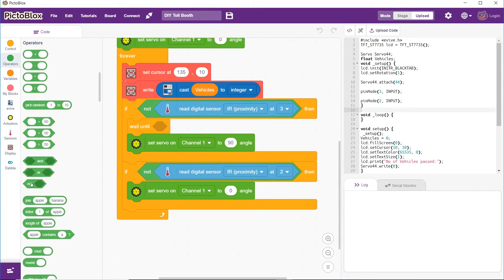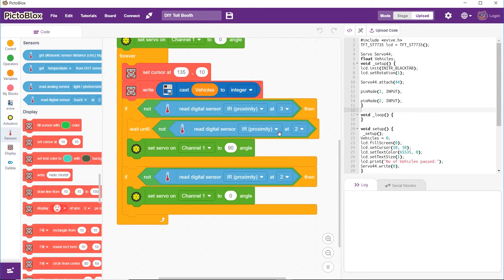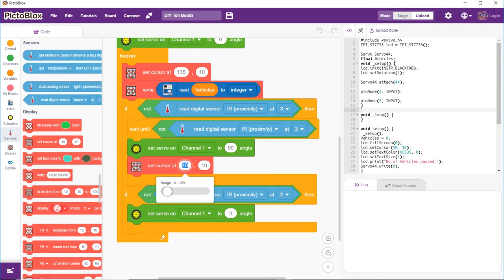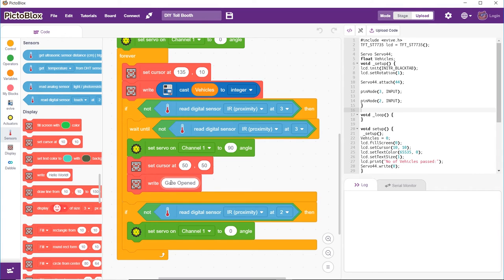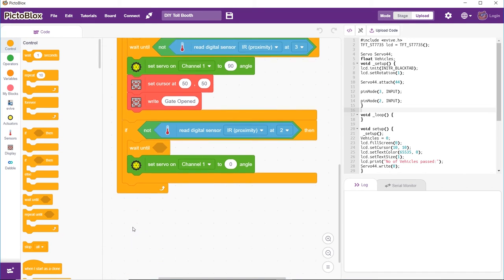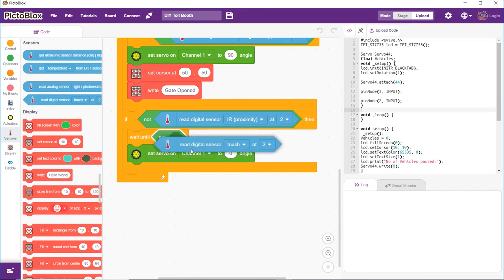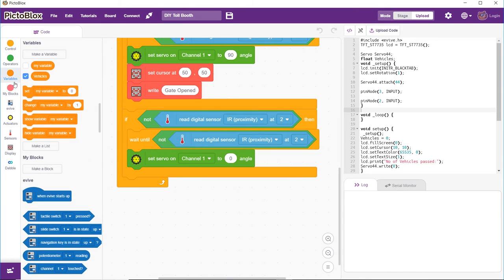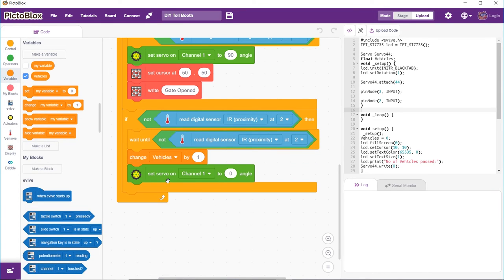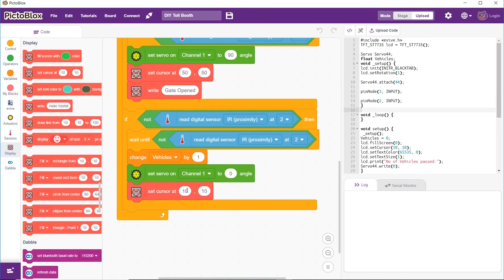As soon as the vehicle will approach the sensor, it will sense the vehicle but the gate will only open when the car goes past the IR sensor. The barrier will then open up and the status gate opened will be displayed on the screen. Similarly, as soon as the vehicle goes past the IR sensor too, the barrier will close, the status gate closed will be displayed and the count of the vehicle passing by will increase by 1.